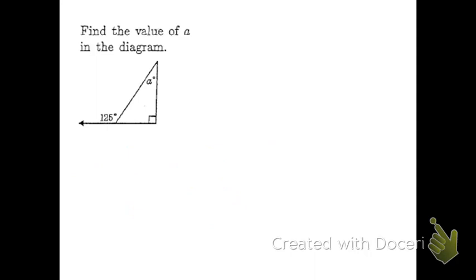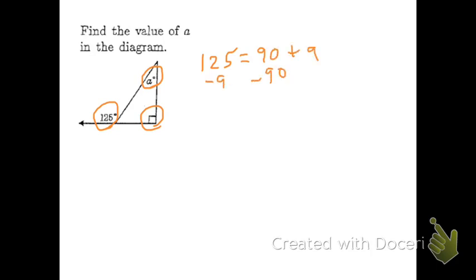Let's apply that quickly in an example. Looking at this picture, we want to figure out angle A. The easiest way is to identify that 125 degrees is the exterior angle, which equals the sum of the remote interior angles. So we set 125 equal to 90 plus angle A. Subtracting 90 from both sides, we get angle A equals 35 degrees. Thank you for watching this video. I hope it was helpful.